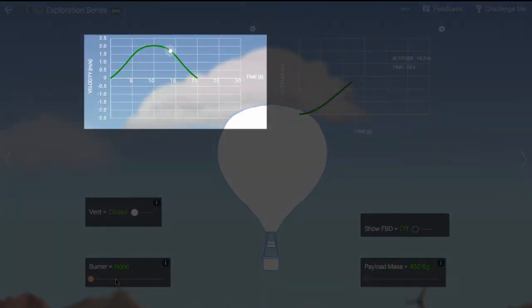The graph at the top left shows the velocity of the balloon as it changes with time. Upward velocities are positive, downward velocities are negative. It reaches maximum velocity at around 10 seconds and comes to a stop by 20 seconds.